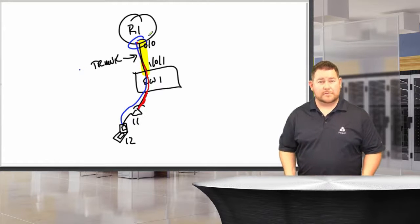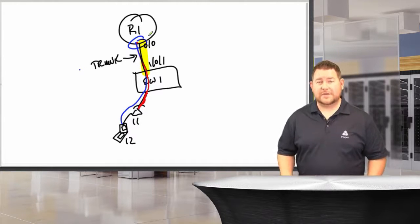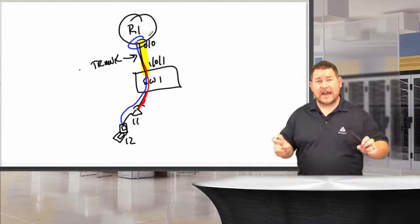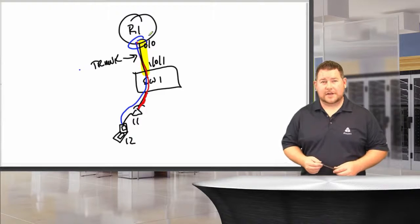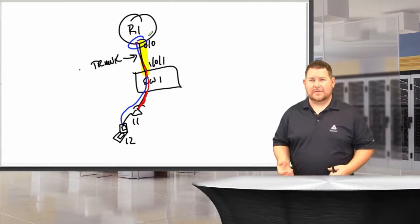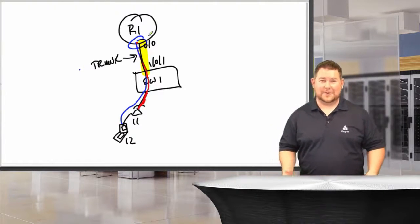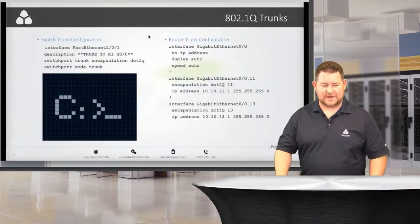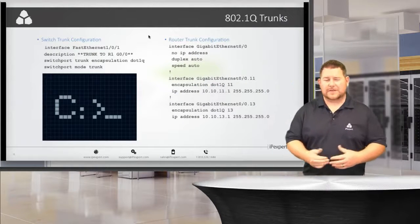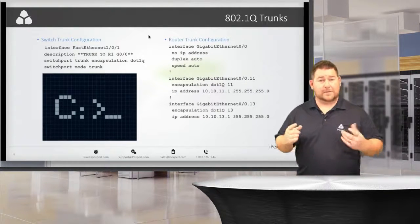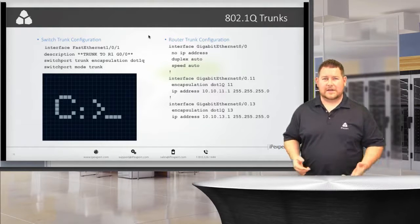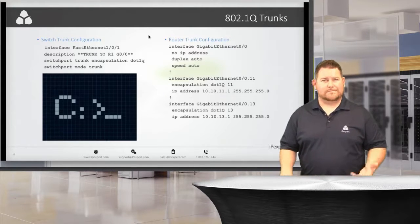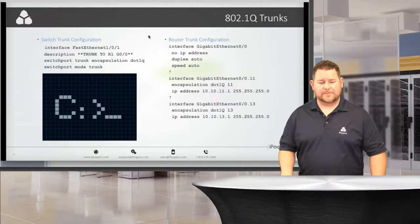Traffic that comes in without a VLAN tag is called the native VLAN — by default that's VLAN 1. You can change the native VLAN, which means that VLAN gets sent untagged to the next device. On the switch side we define the encapsulation — dot1q or ISL — and use 'switchport mode trunk' to allow multiple VLANs. On the router sub-interface, 'encapsulation dot1q 11' looks for traffic tagged with VLAN 11.